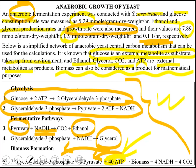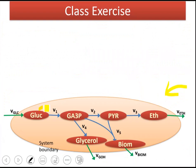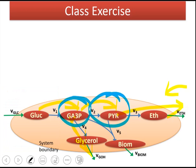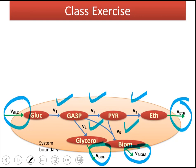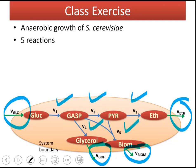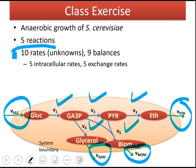This is the given problem. In the sketch, glucose goes to glyceraldehyde-3-phosphate, which goes to pyruvate. Pyruvate goes to ethanol, and glyceraldehyde-3-phosphate goes to glycerol. Glyceraldehyde-3-phosphate and pyruvate are used as precursors for the biomass reaction. In this system, we have five intracellular reactions and five exchange reactions — ten reactions total — and we would like to predict the rates of all of them, giving us ten unknowns.